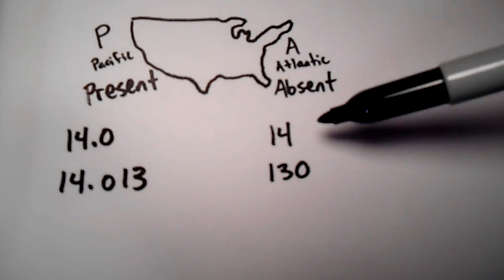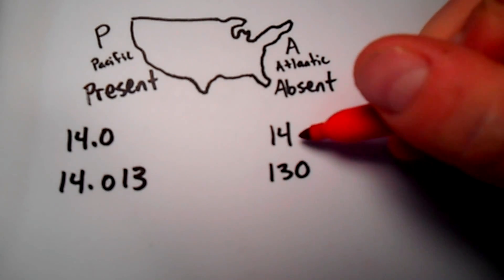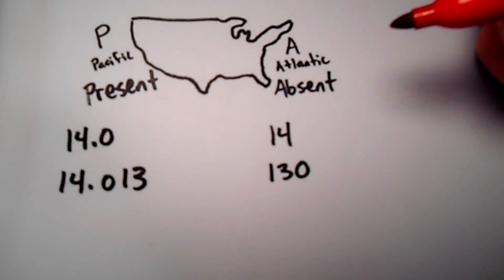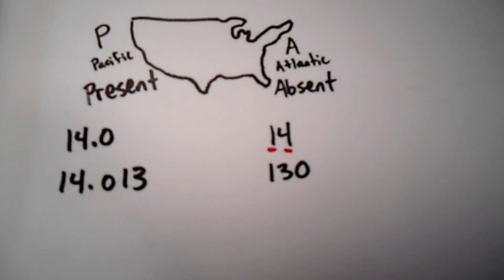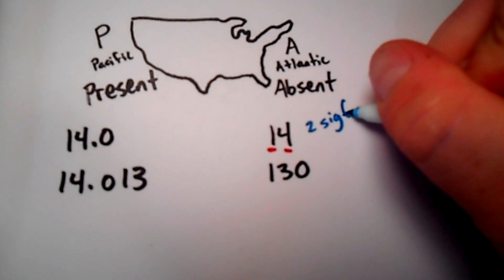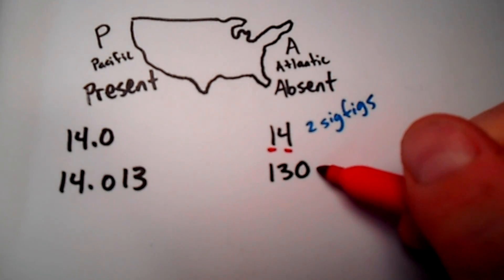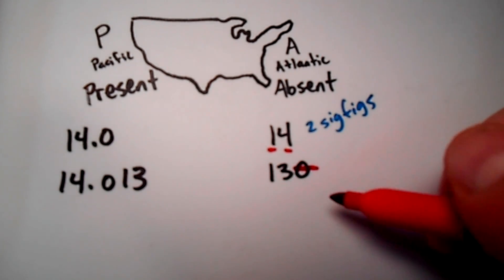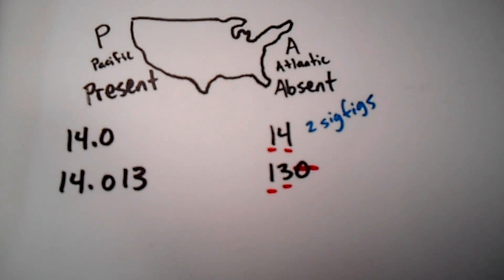If the decimal is absent, here's how this works: you cross off any zeros starting on the right-hand side — the Atlantic side — until you get to the first non-zero number. For 14, the first number on the right-hand side is already a non-zero number, the four, so after that every single number is significant. That means 14 has two sig figs. For 130, the decimal is absent so we start on the right and cross off zeros until we reach the three. That zero is not significant, whereas the three and the one are — so 130 also has two sig figs.